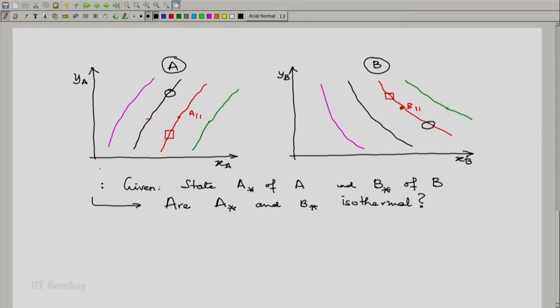And the question which we could answer using this map of isotherms is: given some state A star of A and B star of B, are A star and B star isothermic?